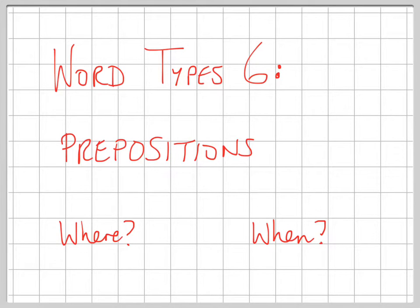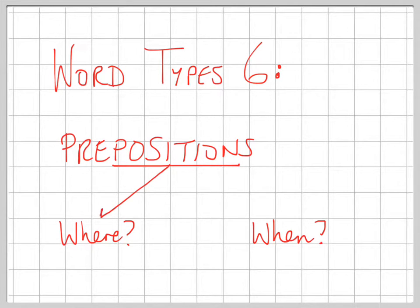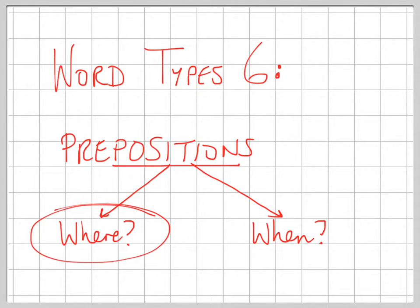Video word type 6 is about prepositions. The word itself gives you a clue as to what it actually means — it's got the word 'positioning,' so a preposition tells you where something is occurring compared to other objects, or alternatively when something is occurring compared to other events. The one we tend to focus on most is the where, but the when is important as well. Let's look at both of those individually.